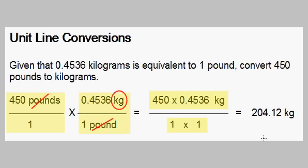We multiply 450 times 0.4536 and we get 204.12 and we also have the kilograms units. The 1 times 1 in the denominator is just 1 and 204.12 kilograms over 1 is just 204.12 kilograms.